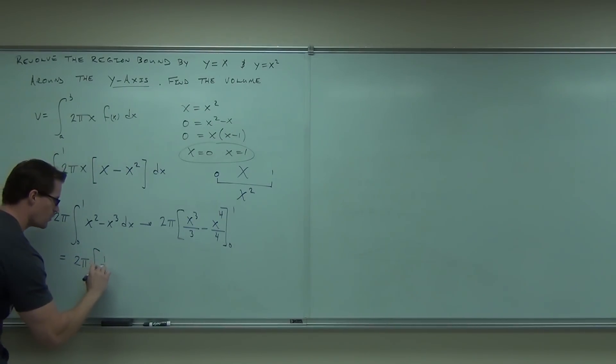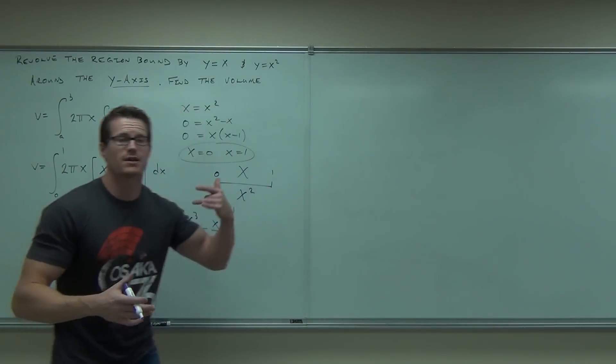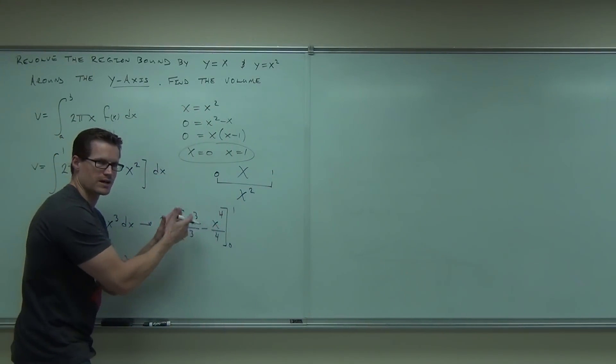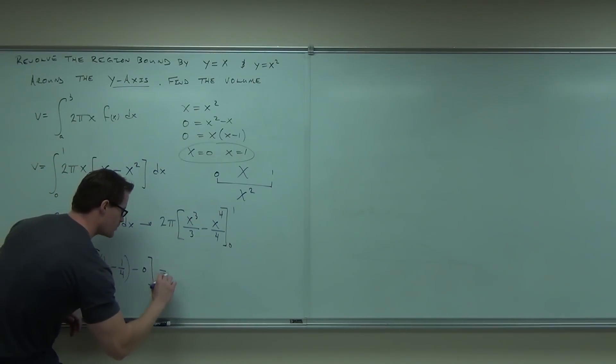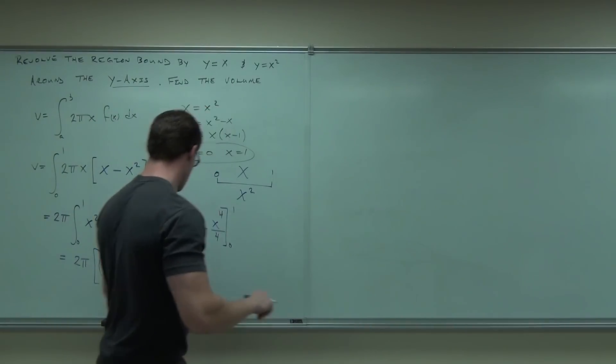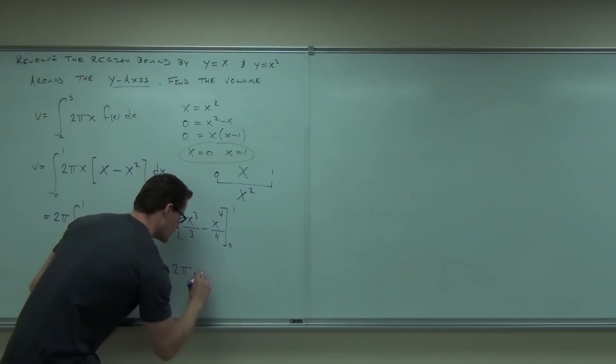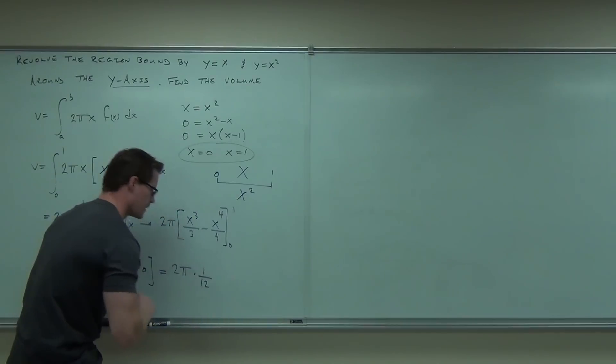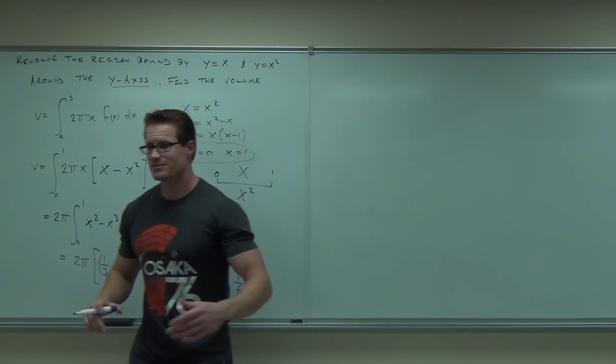So that gives you 2π. If we plug in the one, you're going to get one third minus one fourth. I'm going to test the zero just to make sure. We're going to get zero in this case. That is going to be zero. So basically we have 2π times, if you do that fraction, I believe you get one twelfth. We're going to get 2π/12 which is π/6.